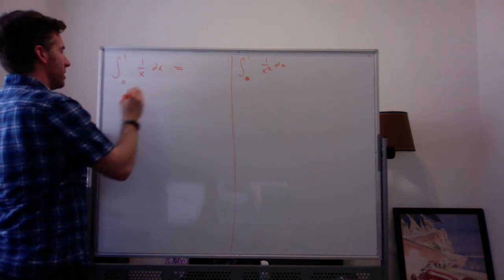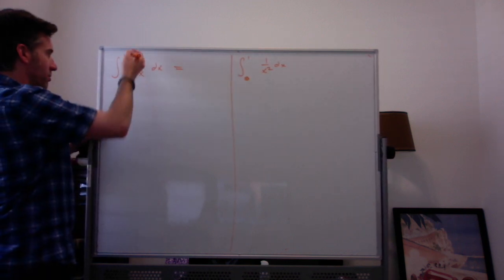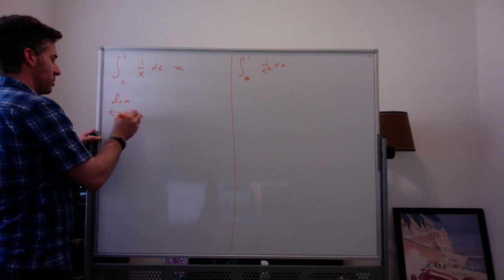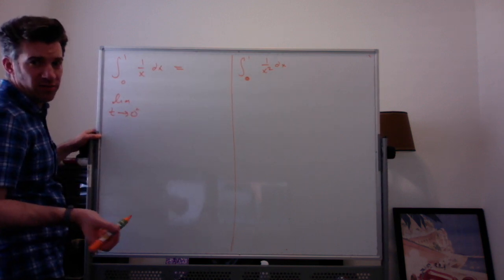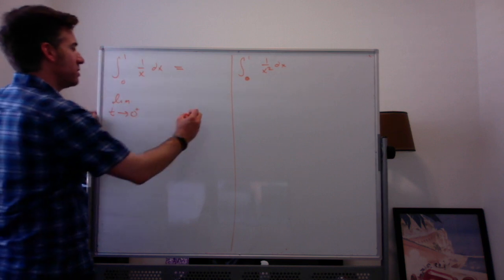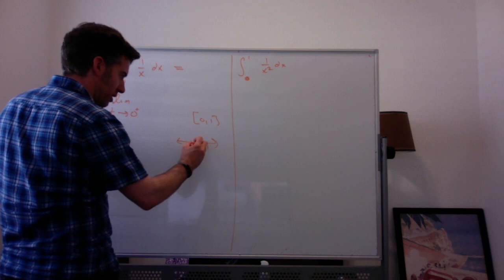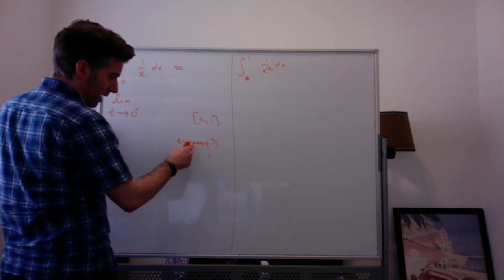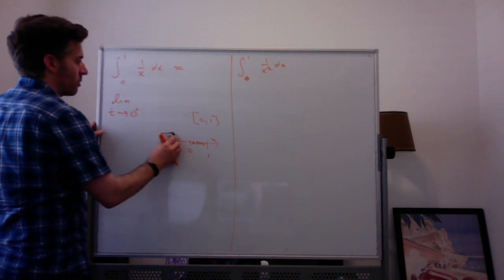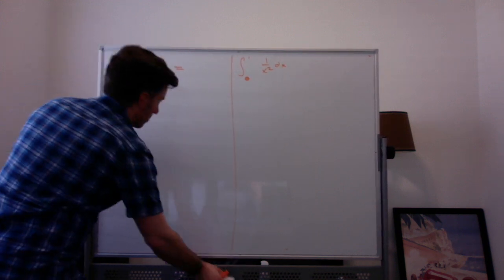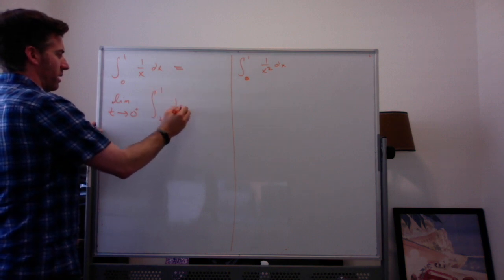So I have to rewrite this as the limit — you can use t, a, or b. I'm going to use t approaching 0 from the right. Since we're integrating between 0 and 1, t is definitely on the right side of 0. So this becomes the limit as t goes to 0 from the right of the integral from t to 1 of 1 over x dx.